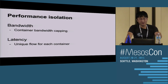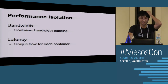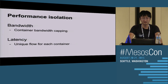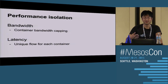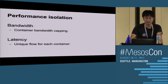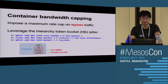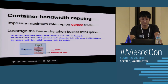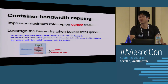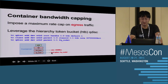We also do performance isolation, including bandwidth and latency isolation. For bandwidth isolation, we introduce container bandwidth capping - a cap on egress traffic - to prevent one container from using all the bandwidth of the entire host. The container bandwidth capping imposes a max rate cap on egress traffic, leveraging the HTB qdisk already in the Linux kernel. We install an HTB qdisk on eth0 inside the container with one HTB class where you can set a rate, say 300 megabits, and use a leaf qdisk FQ CoDel.